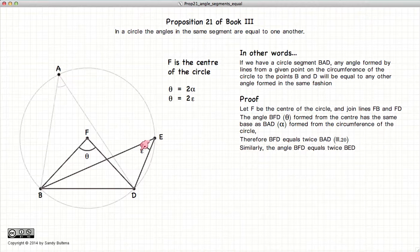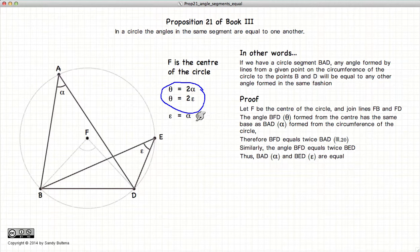Similarly, BED will be half of BFD, again by Proposition 20 of Book 3. So here we have theta is equal to 2 alpha, and it's also equal to 2 epsilon. Given these equalities, we have that epsilon is equal to alpha.